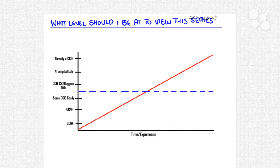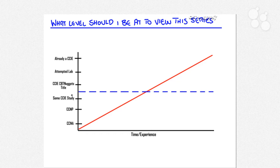Now, before we get going, I want to make sure that everybody's set as to what prerequisite information you should know or what level you should be at before you jump into this video series. I decided to draw this out on a graph - I have these markers, which I call career markers or markers of knowledge in the Cisco world, and how much time it takes to get there. I can't exactly tell how much time for each person because everybody's different in how fast they're able to learn and soak in this technology. Down here I have the CCNA up to the CCNP, some CCIE studies and dot dot dot - right there is where you should be before you jump into this CCIE lab series.